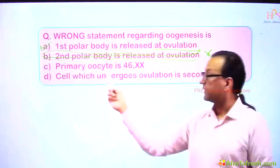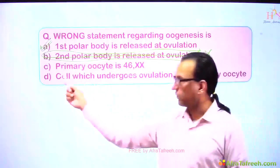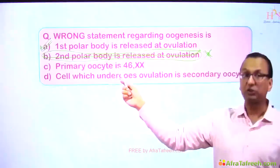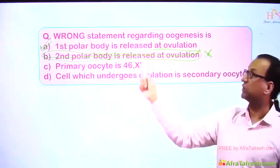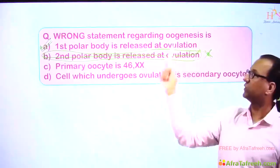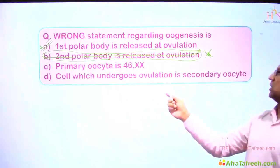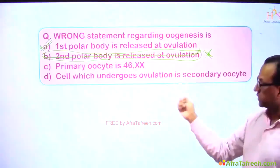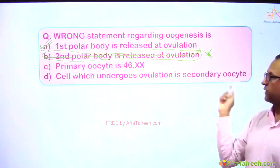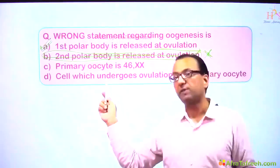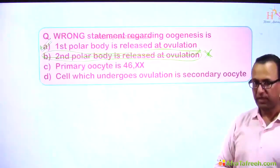The primary oocyte is a diploid cell; it is the largest cell and is 46XX, because we are talking about oogenesis in a female. The cell which undergoes ovulation is the secondary oocyte — it is the secondary oocyte which undergoes ovulation and will be fertilized by the sperm. So we keep our answer as choice number B.